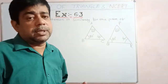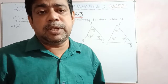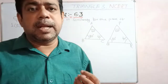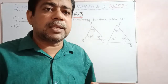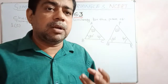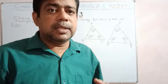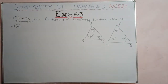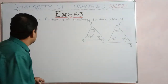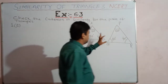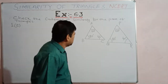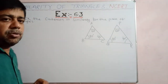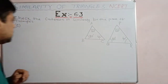Here I am going to discuss question number one of Exercise 6.3. In this question, pairs of triangles are given and we have to check whether the pair of triangles are similar or not, and if similar, under what criterion the triangles may be similar.